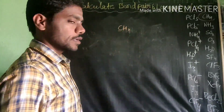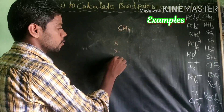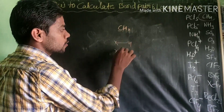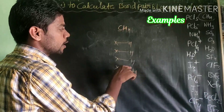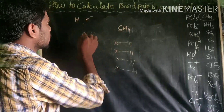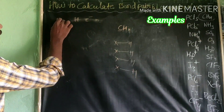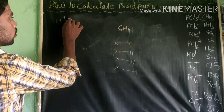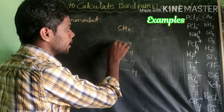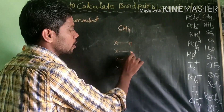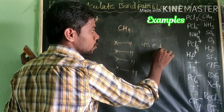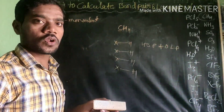In methane, there are 4 bond pairs and zero lone pairs. Now for ammonia: nitrogen is in the 15th group, so it has 5 valence electrons. There are 3 hydrogens forming 3 bonds, but 2 electrons are left over — these 2 electrons form 1 lone pair.